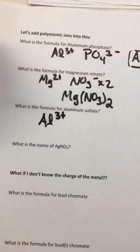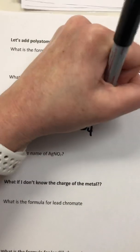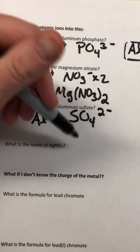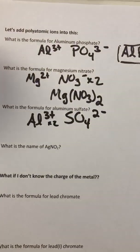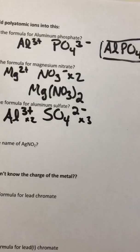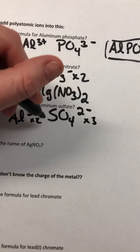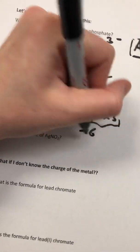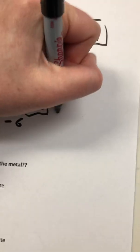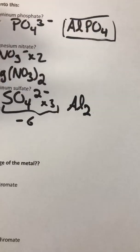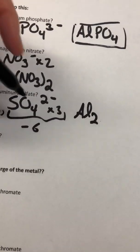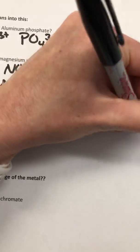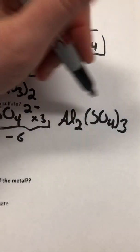Aluminum sulfate: aluminum has a three-plus charge and sulfate (SO4) has a two-minus charge — the same situation as aluminum oxide. You need two aluminums and three sulfates to get a positive six and a negative six, which cancels out. You write it as Al2(SO4)3 — three whole sulfates, not three of just the O4. No charge should ever be written on the final compound.